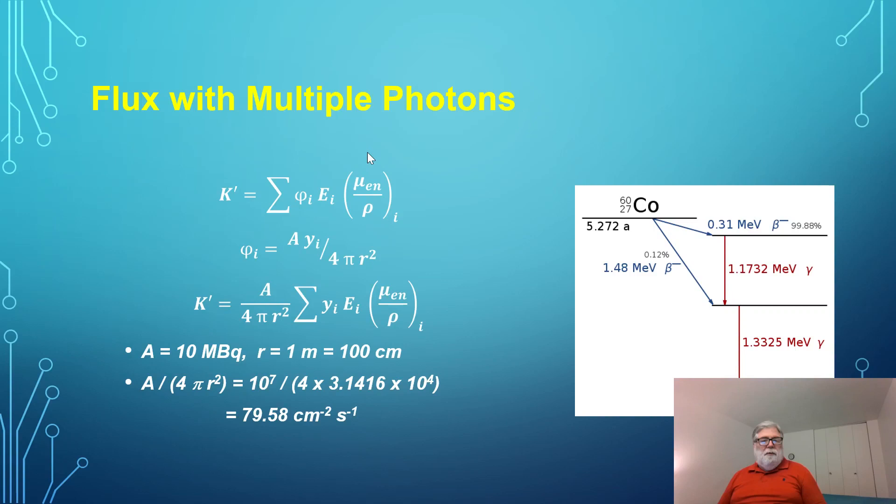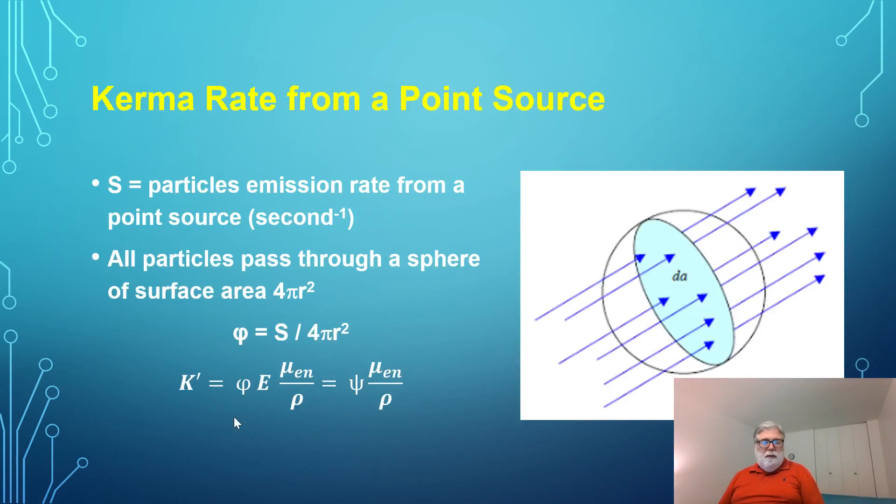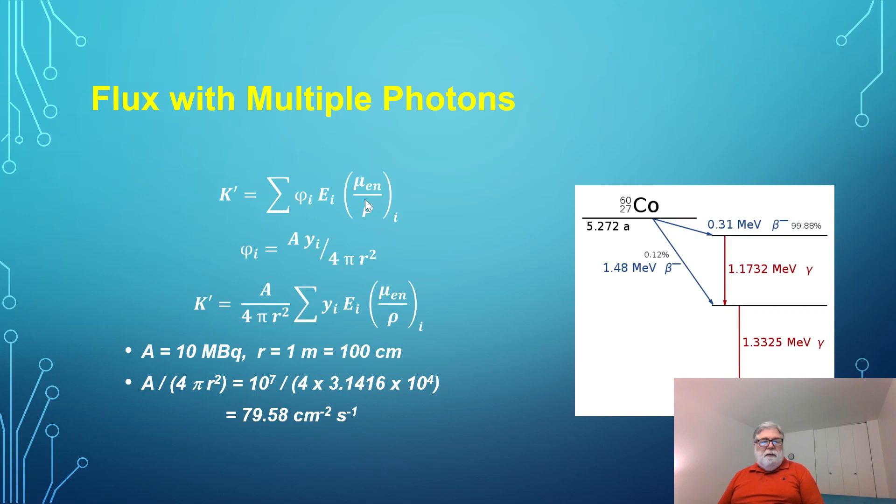Now I want to talk about what happens if you have multiple photons, rather than a single photon being emitted from the source. In that case, you have to do this for each photon energy individually. Each photon energy might have a different flux, would have a different energy, it might have a different absorption coefficient. The flux rate for each individual isotope is the activity of a point source times the yield for a given isotope, that is how frequently that energy is emitted, and then the flux is divided by 4 pi r squared.